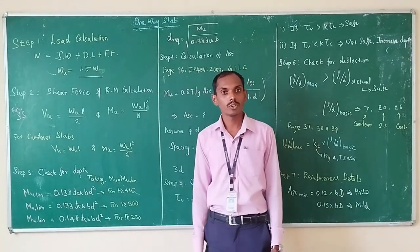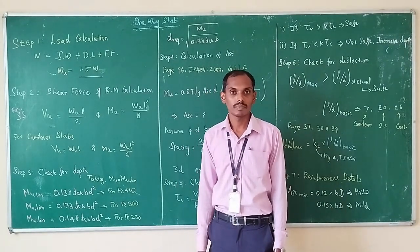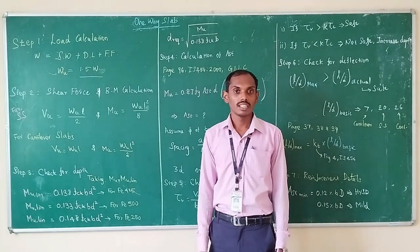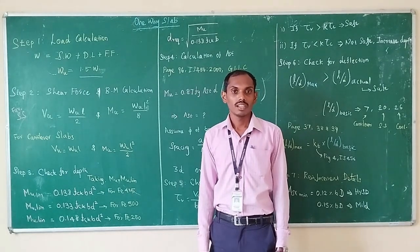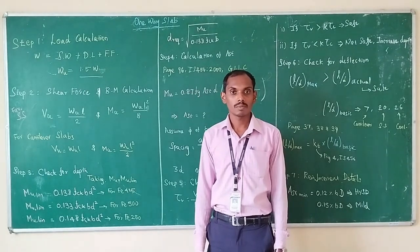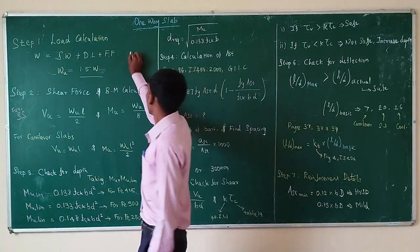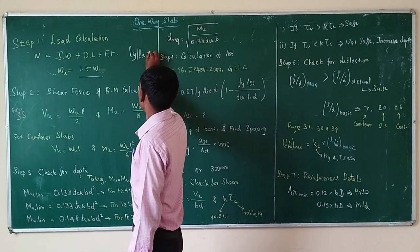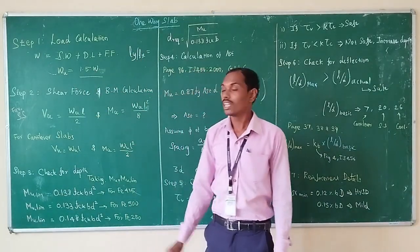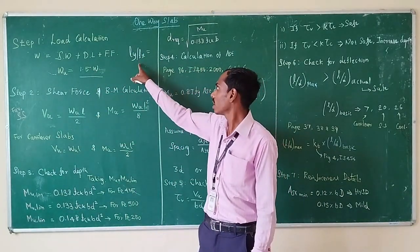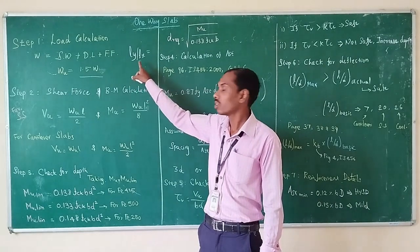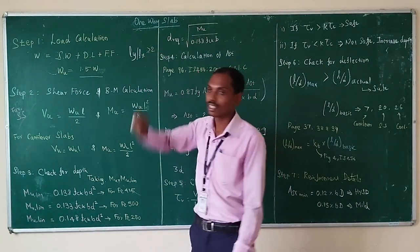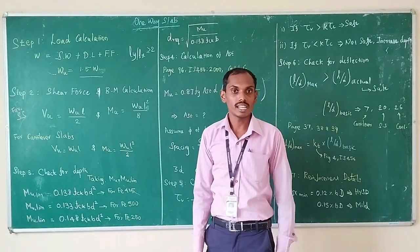First of all, we want to know what is meant by a one-way slab. A one-way slab is defined by the ratio between the longest span (Ly) to the shortest span (Lx). If this ratio is greater than 2, the slab is called a one-way slab.